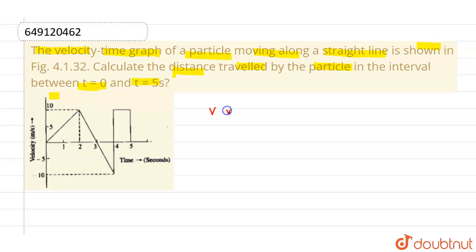So, if we are given with velocity versus time graph, then the area enclosed between the graph is the distance.